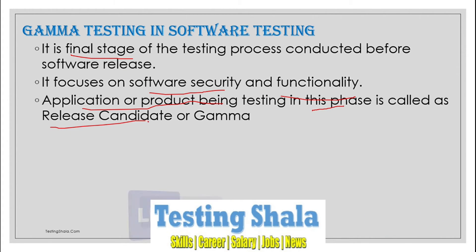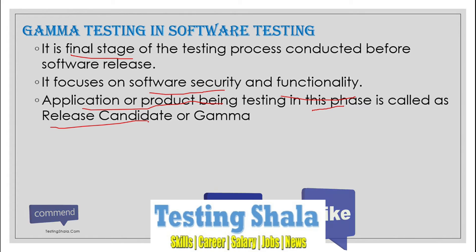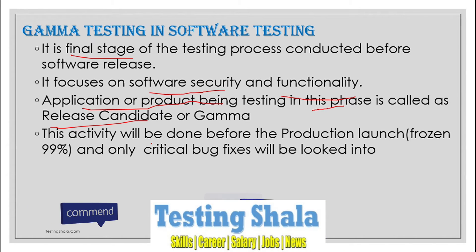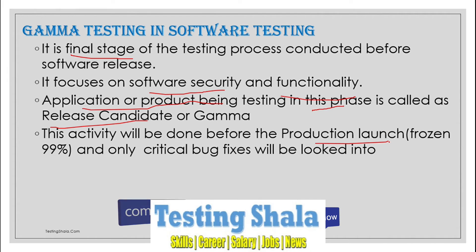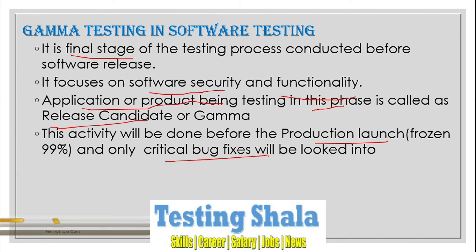Gamma testing will normally be done when we have frozen everything — almost more than 99% of the activity will be frozen. Only the critical works will be getting fixed or looked into as part of gamma testing.